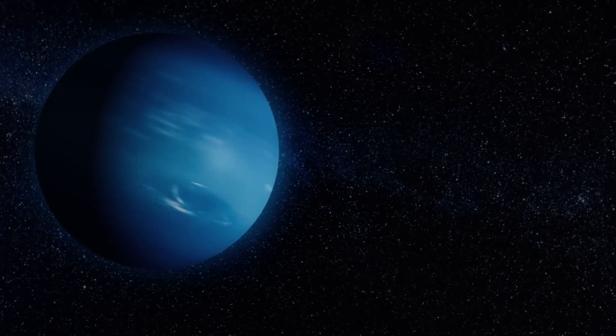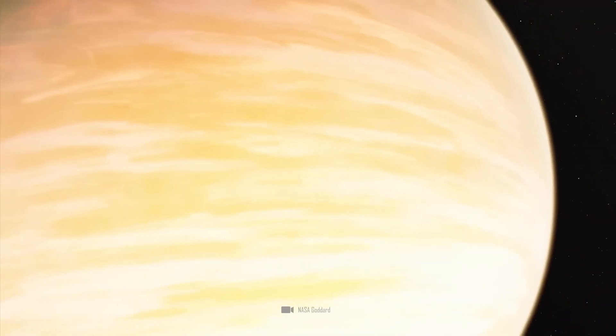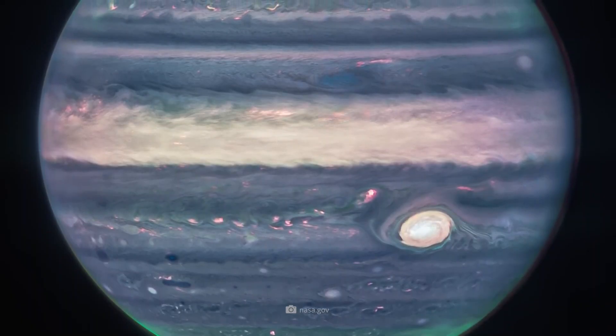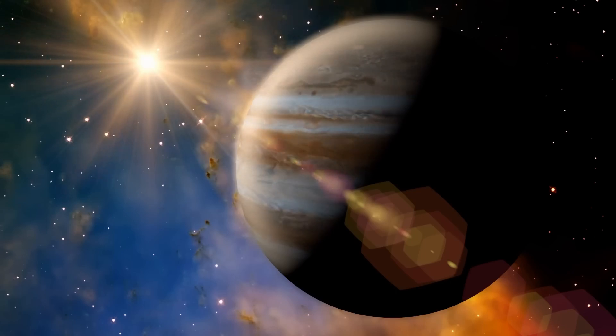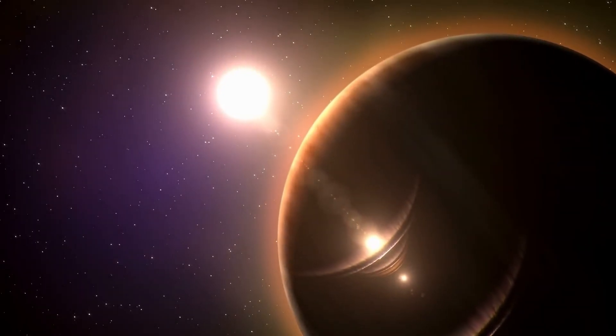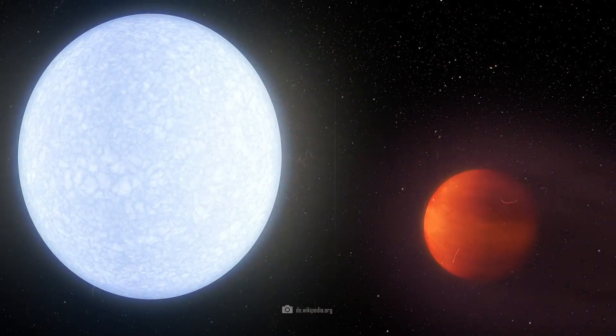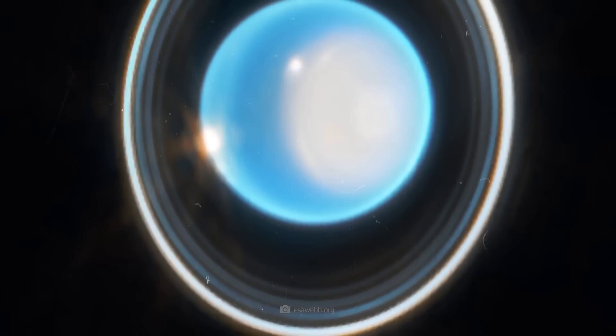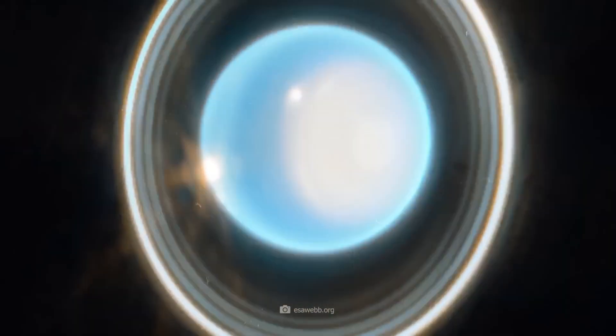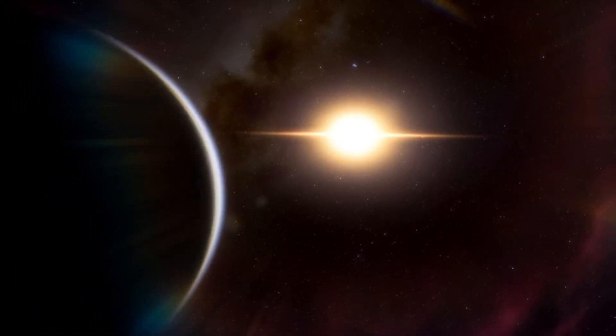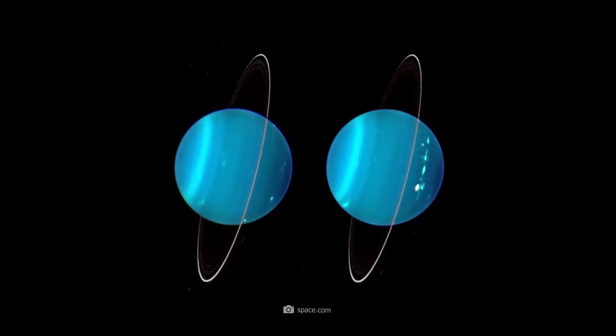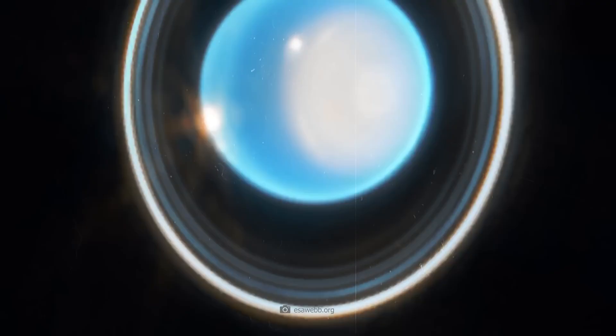Enceladus in particular is fascinating as it ejects fountains of water almost 10 kilometers high from a subterranean ocean into space. Phosphorus was recently discovered there, making Enceladus a promising candidate for the search for extraterrestrial life. Enceladus is a rather small moon with a diameter of around 504 kilometers. Nevertheless, there are many moons around Saturn that are much smaller than Enceladus.